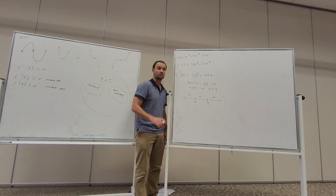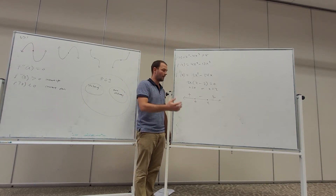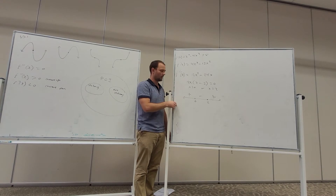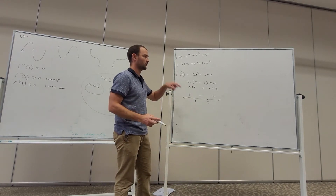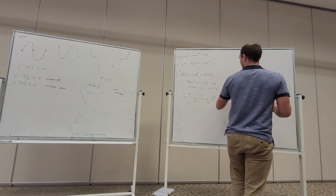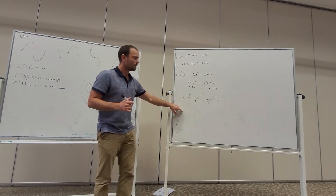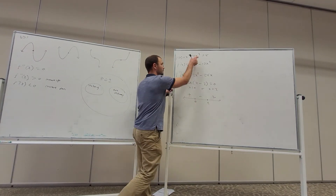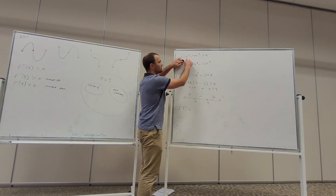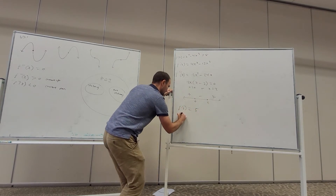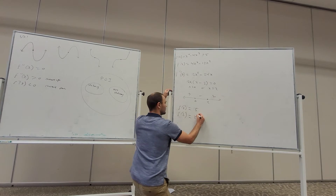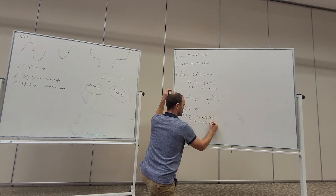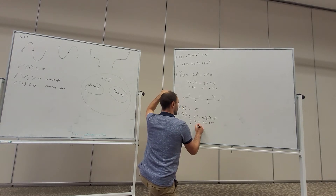Just like we did with stationary points, we need to determine the coordinates — we need the corresponding y value, and we need the nature of the points of inflection. Let's find the y values first by putting them into the original function. f(0) gives us 5. And f(2) = 2⁴ - 4(2³) + 5 = 16 - 32 + 5 = -11.